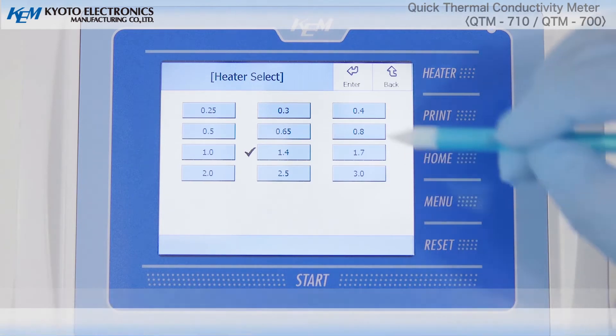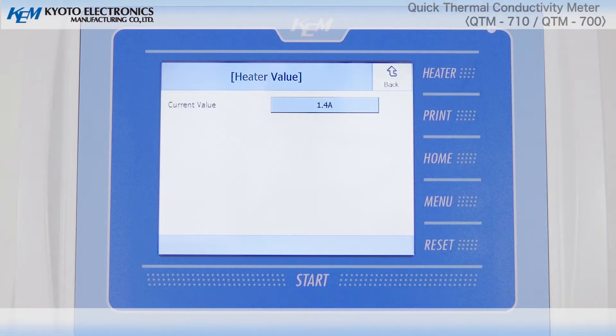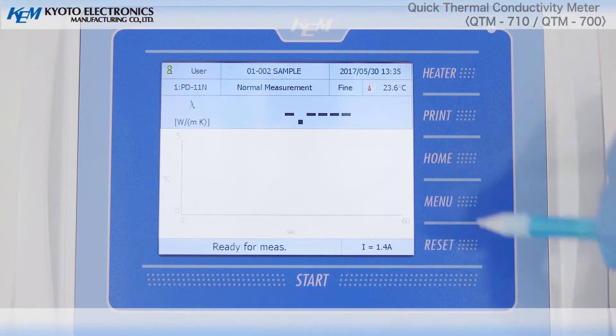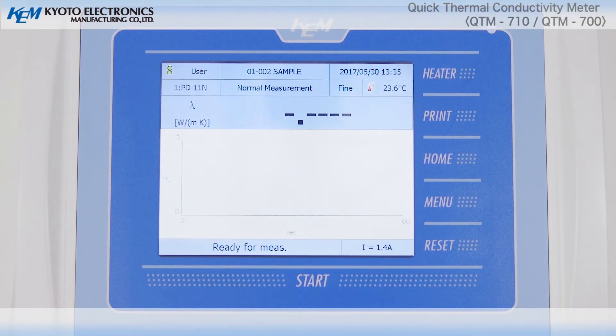Press the Enter key to confirm the input contents. After confirming the input, press the Home key to return to the main screen. With the above settings, standard measurement becomes possible.